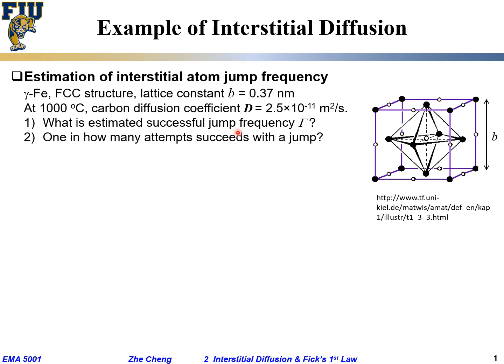The second part: one in how many attempts would lead to a successful jump? Remember, every atom is always vibrating at its lattice site due to thermal vibration. As long as we are not at absolute zero K, it's always wandering around. But I want you to estimate one in how many attempts it's moving, but occasionally it jumps. What's the probability?